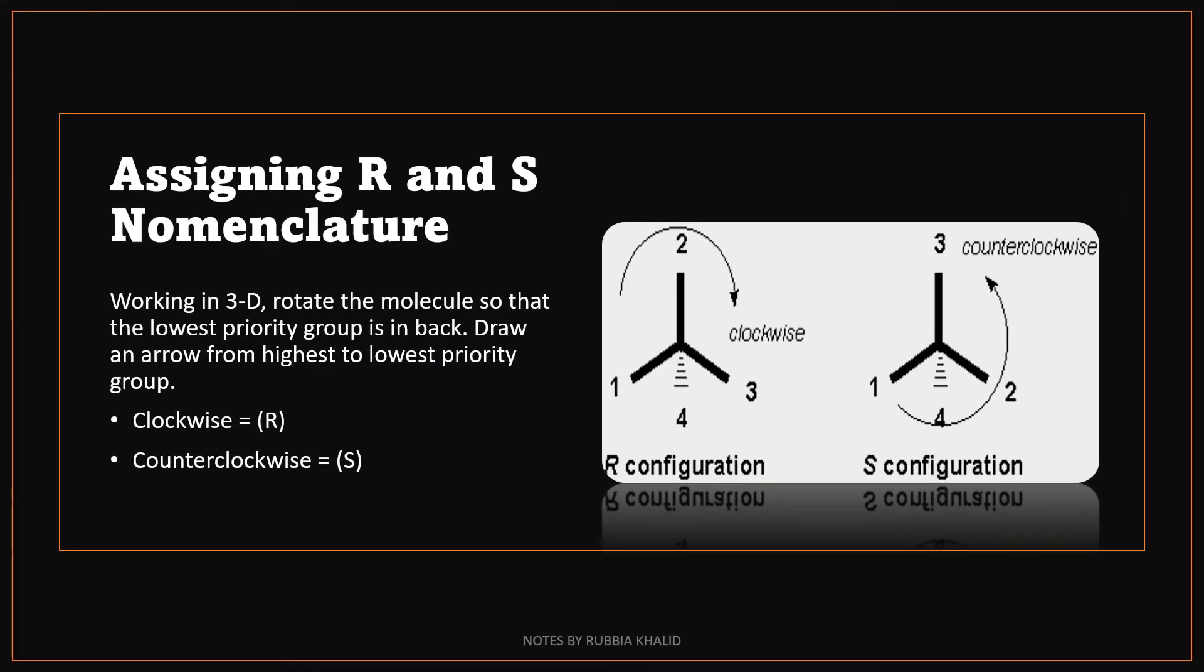Assigning R and S nomenclature: working in the 3D, rotate the molecule so that the lowest priority group is in the back as we seen before. Draw an arrow from highest to lowest priority group. Clockwise is R and counterclockwise is S.